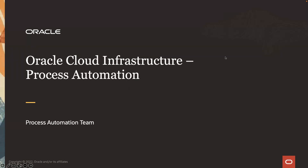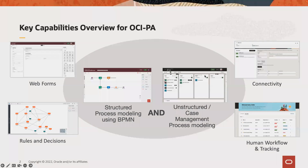Hi, as part of this 10-minute overview, we will cover the OCI Process Automation Service. This service enables customers to end-to-end automate their business processes that could span multiple applications, that could involve human tasks they're looking to digitize, as well as various workflows in the company that they're looking to digitally transform.